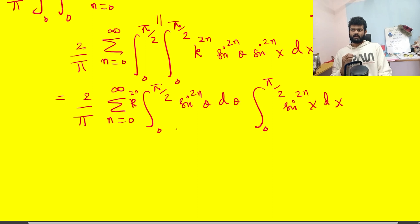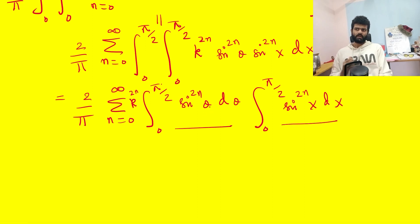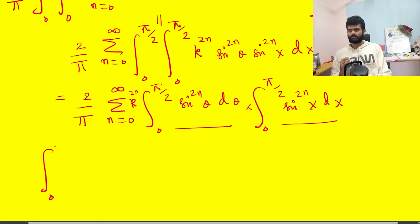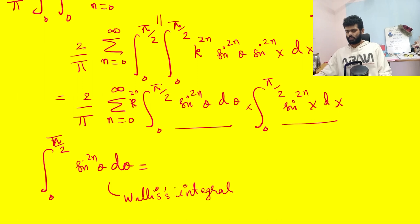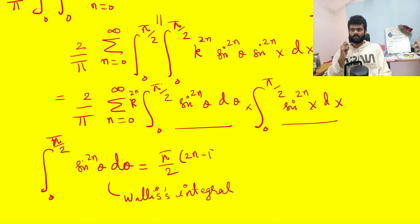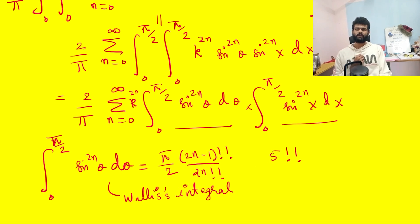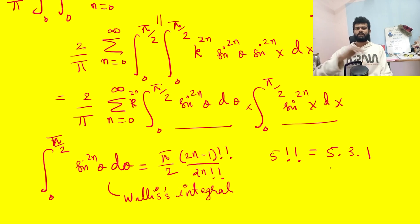Both integrals are identical (only the variable name differs), and each is the Wallis integral: ∫₀^{π/2} sin^{2n}θ dθ = (π/2) · (2n−1)!! / (2n)!!, where double factorial of an odd number like 5 means 5·3·1, and double factorial of an even number like 4 means 4·2.